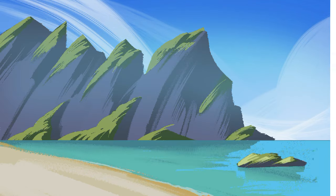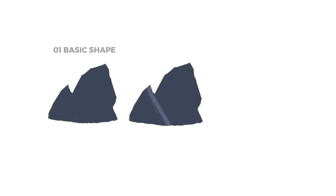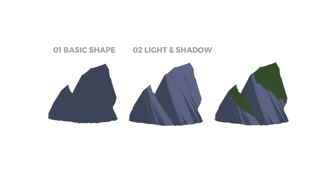You'll see these steps are very easy. The first step is to create a shape. The second step is to establish the light and shadow, and the third step is adding details — as little or as much as you want.